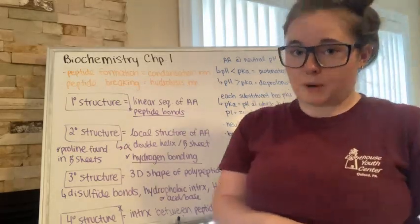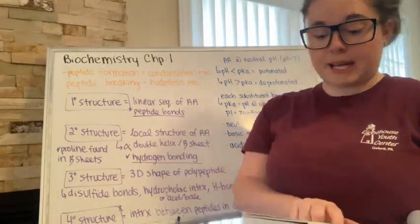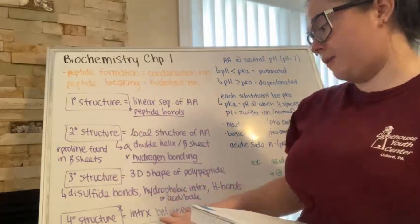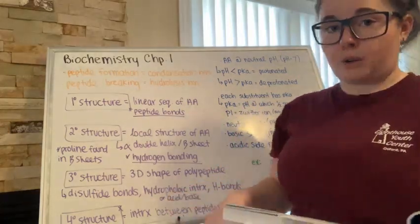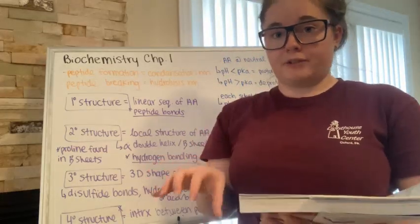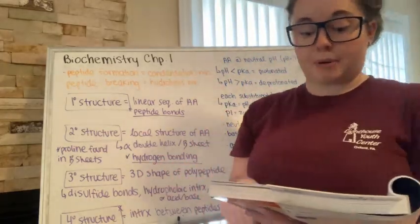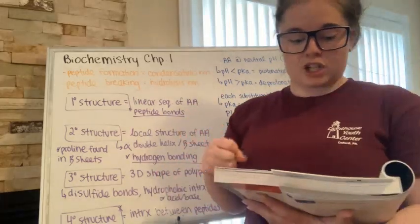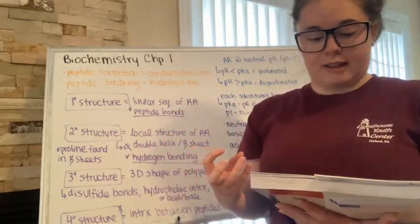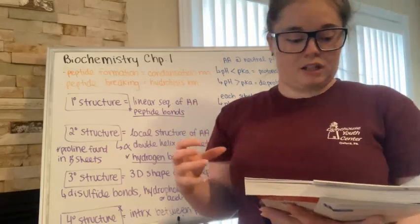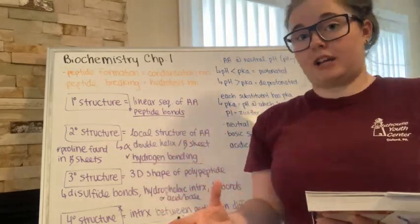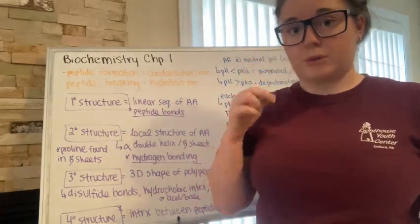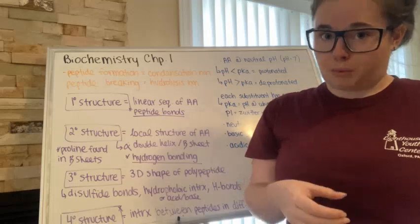A good example used in the MCAT books is hemoglobin. Each hemoglobin subunit plays into quaternary structure because hemoglobin has different subunits and contains a prosthetic group called heme. The heme group contains the iron that binds and carries oxygen in hemoglobin. Hemoglobin is actually inactive without the heme group, which is why these prosthetic groups are so important.